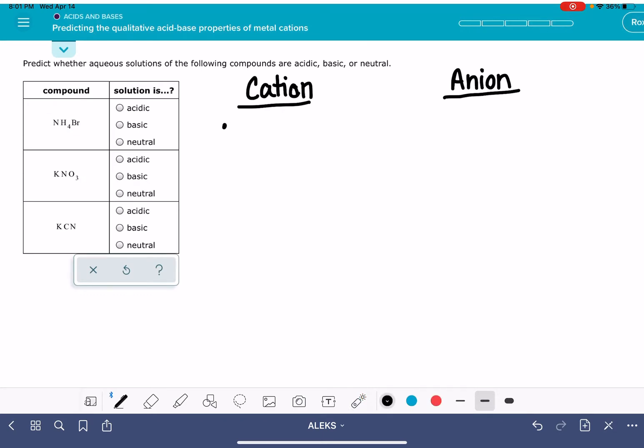If our cation comes from group 1A or 2A on the periodic table, it is a neutral cation, meaning it's going to produce a solution that is a pH of 7. All other cations are acidic.